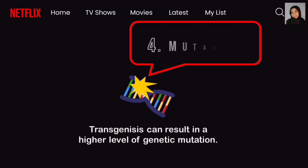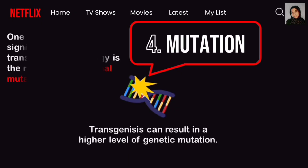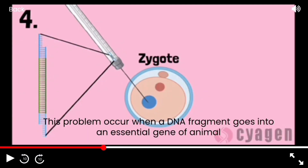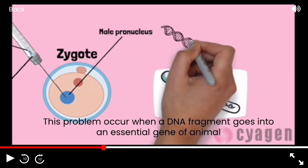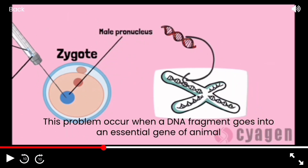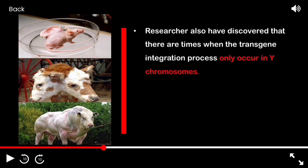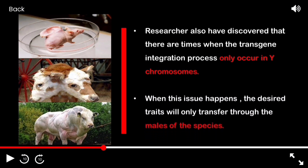Lastly, transgenics can result in a higher level of genetic mutation. One of the most significant risks is insertional mutation, which occurs when a DNA fragment goes into an essential gene of the animal, resulting in numerous disrupted biological processes. Researchers have also discovered that there are times when the transgenic integration process only occurs in Y-chromosomes, meaning the desired traits will only transfer through the males of the species.